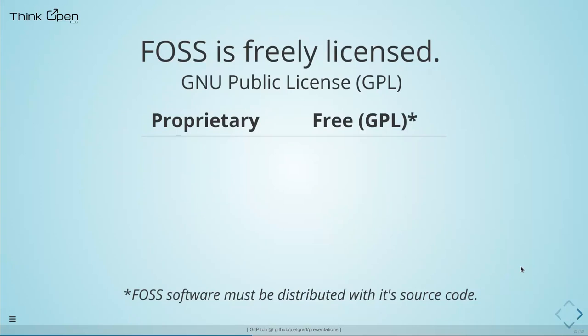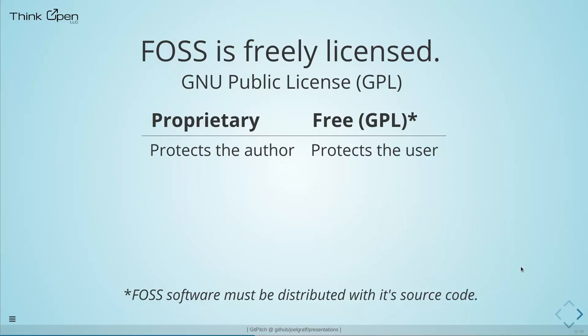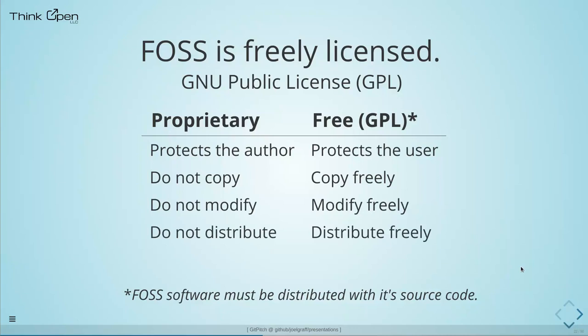Free and open source software is licensed under what are called free software licenses — one of the most popular being the GNU Public License, or GPL. The difference between a proprietary and free software license is simple: a proprietary license is designed to protect the rights of the software author or vendor, while a free software license is designed to protect the rights of the software user. Proprietary licenses do not allow copying or modification, whereas free software licenses encourage the user to freely copy, freely modify, and freely distribute the software.